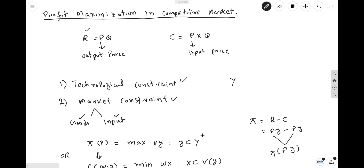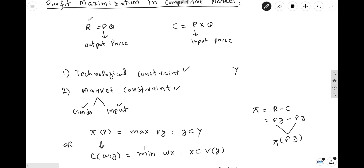Maximization of profit also means minimization of cost. You can report the same phenomenon — profit maximization — in terms of the cost function: maximum profit means minimum cost. Here, the production possibility plan belongs to the production possibility set, and the input bundle is a subset of the input requirement set V(Y), which is the input requirement set needed to produce that level of output. So profit maximization means cost minimization.